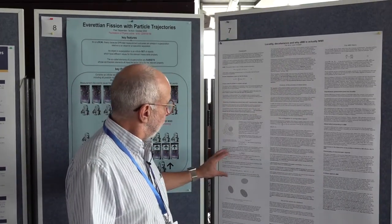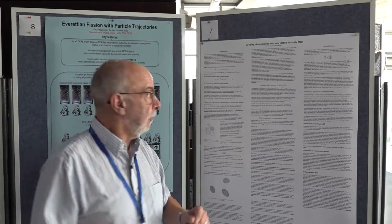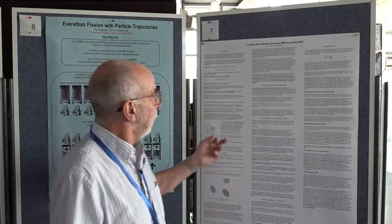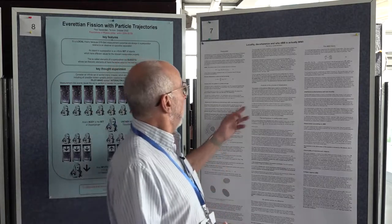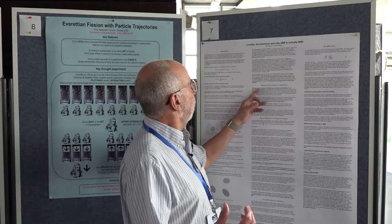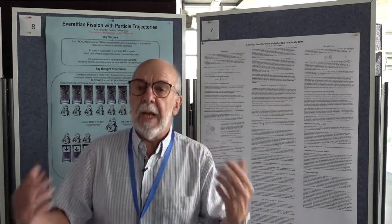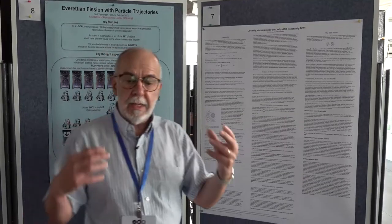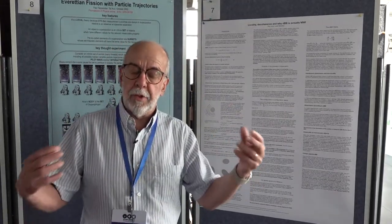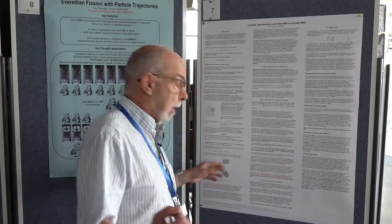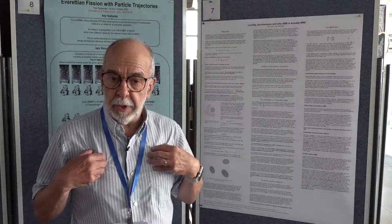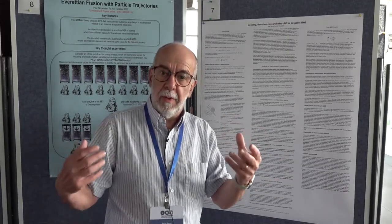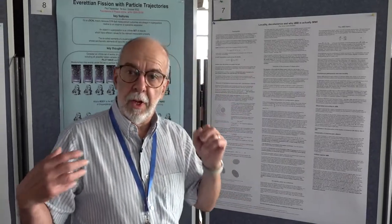As noted, decoherence doesn't give absolutely well-defined positions. The basis that diagonalizes the reduced density matrix is not the spatial basis. So the question of a preferred Hilbert space basis is a red herring — it's not what you should look for. Rather, what you should look for is that you have these reasonably well-defined relative positions of macroscopic objects. That's what decoherence theory gives: not a perfect basis.